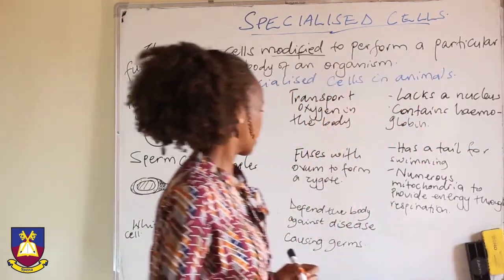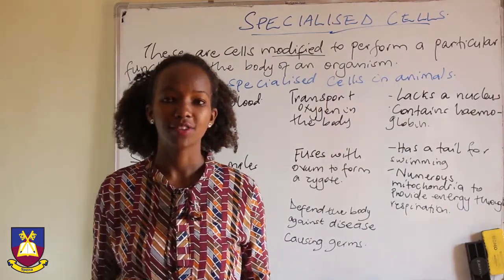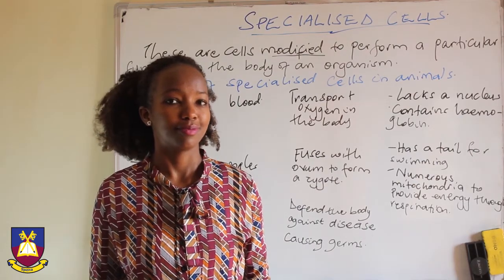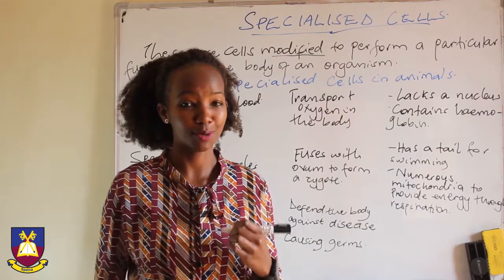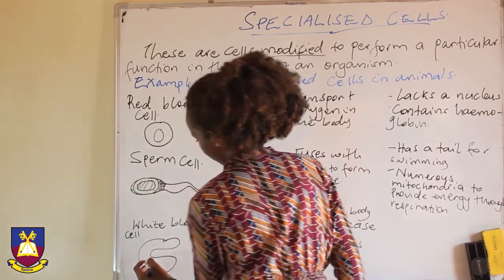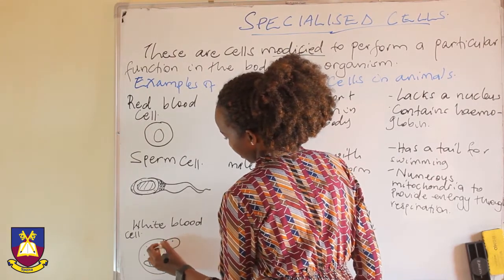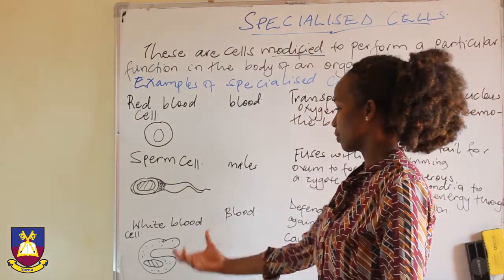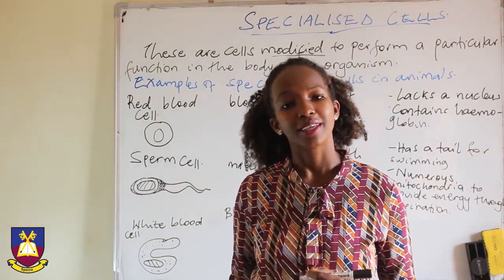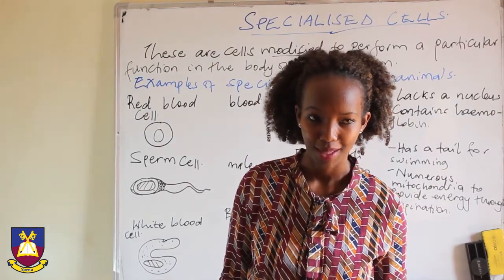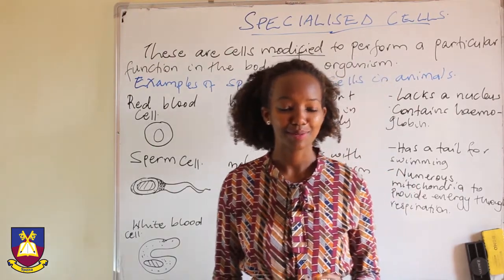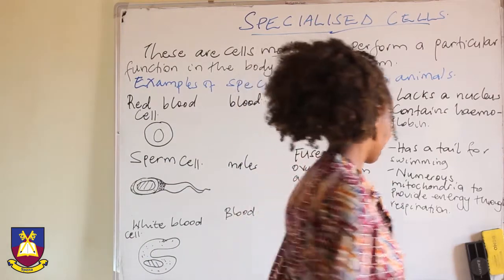The white blood cell defends the body against disease-causing germs — in other words, it protects us from disease and infection. That is why they say someone's immunity is too low or has been compromised — they are dealing with the white blood cell. Its shape is not regular; it has a nucleus and very many granules inside it. This irregular shape enables it to engulf disease-causing germs, so it defends our body by literally eating the enemy. The time when it is overwhelmed is when you start to get symptoms of diseases like COVID-19, AIDS, or malaria.